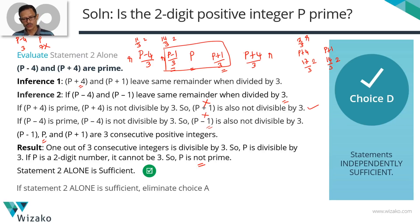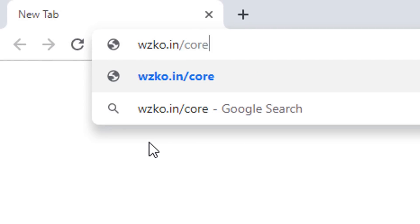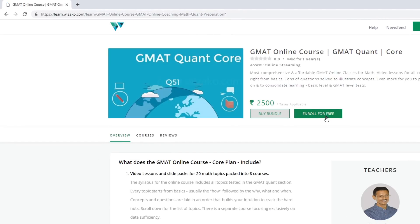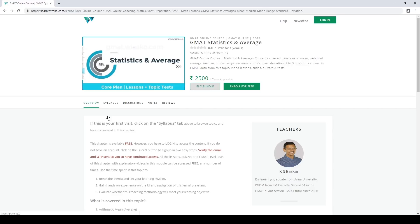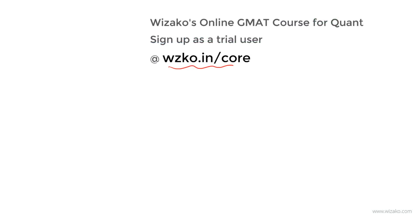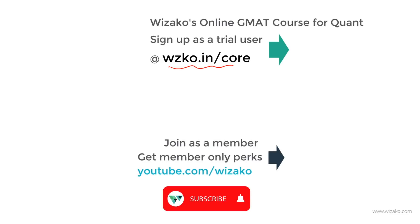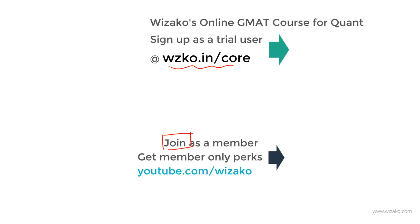Before you leave, please sign up as a trial user at wzko.in/core. Start with statistics and averages, build momentum in your GMAT preparation, and get a handle on the teaching methodology. Then convert to a paid user and unlock the remaining 19 topics — one of the most comprehensive online courses for GMAT quant. Also, subscribe to the YouTube channel at youtube.com/vizako, and consider joining as a member for member-only perks to boost your GMAT preparation.